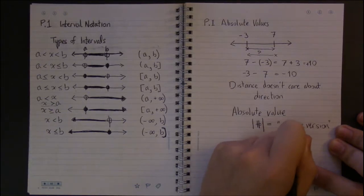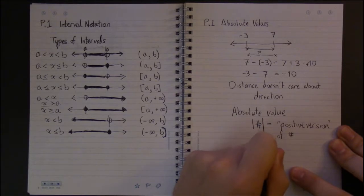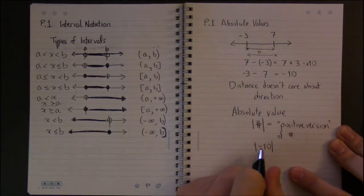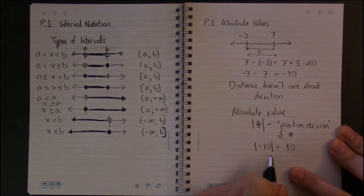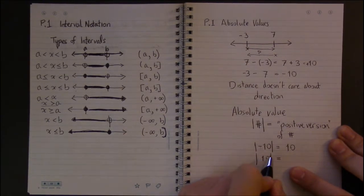So if we take the absolute value of our negative 10 from before, we just make negative 10 positive and we get 10. Taking the absolute value of a negative just makes that negative number positive. But we could also take the absolute value of positive numbers, and the positive version of 10 is just 10. It's already positive, so we don't do anything to it.